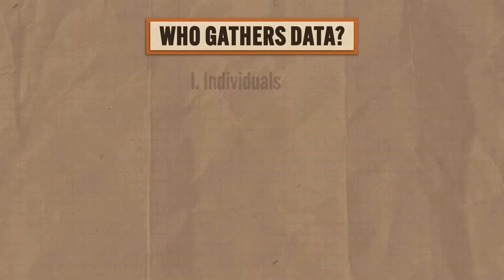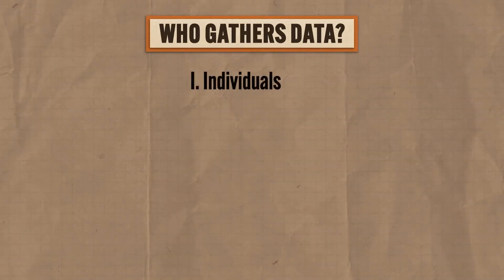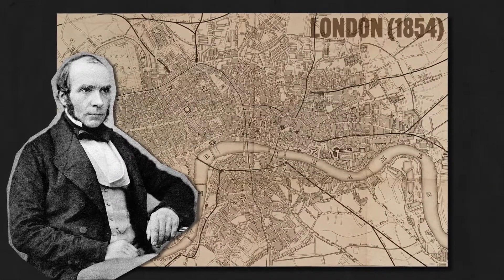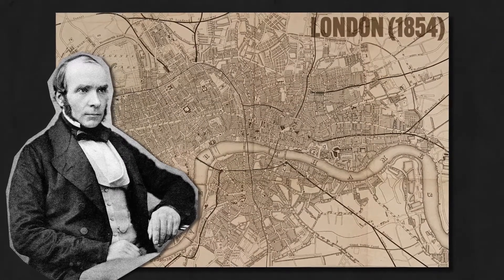First, individuals gather geographic data. So maybe that individual is a researcher trying to plot the spatial spread of disease so that plans and policies can be created to stop the spread. Remember our boy Jon Snow from the last video? That's exactly what he did with the spread of cholera in London.